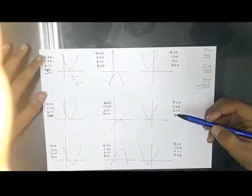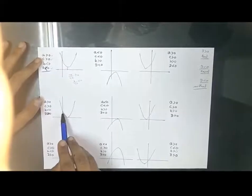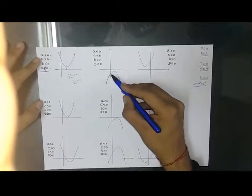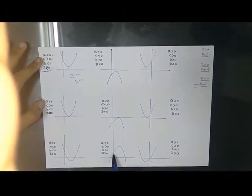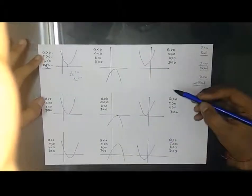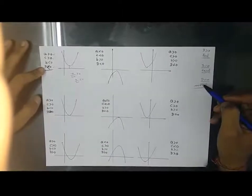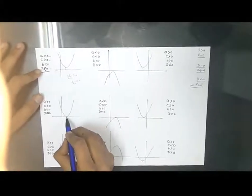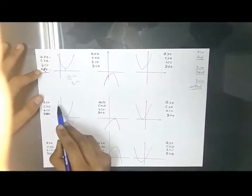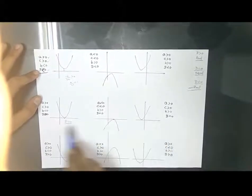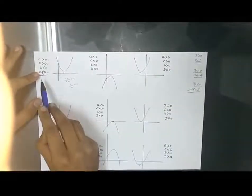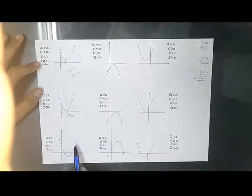For all nine graphs, the graph opens upward, so a is positive. The sign of c depends on where the graph cuts the y-axis: if it cuts at a positive point, c > 0; if at a negative point, c < 0. For the vertex: the x-coordinate of the minimum point is -b/(2a). If this is positive, then b/(2a) is negative, so b < 0 when a > 0. If the graph touches the x-axis, D = 0. If it does not cut the x-axis, D < 0. If it cuts the x-axis at two distinct points, D > 0.